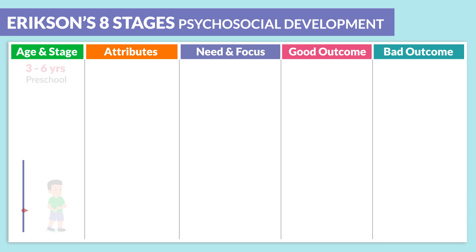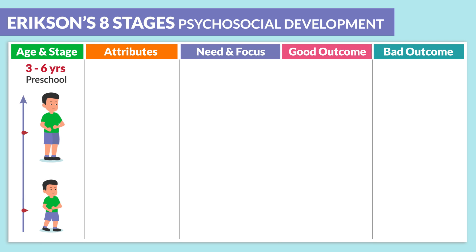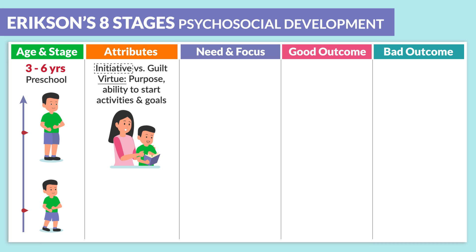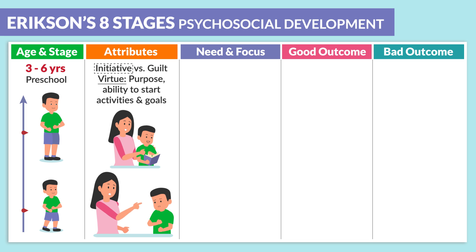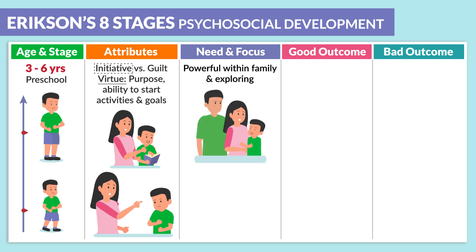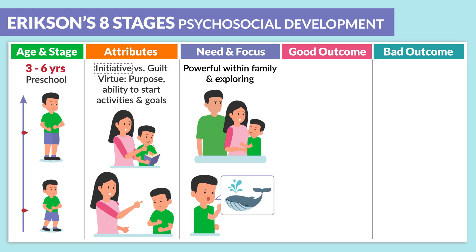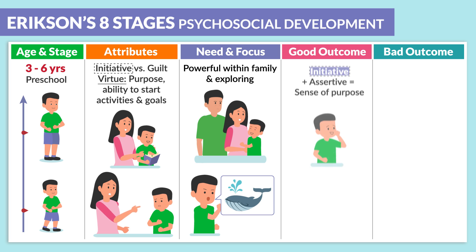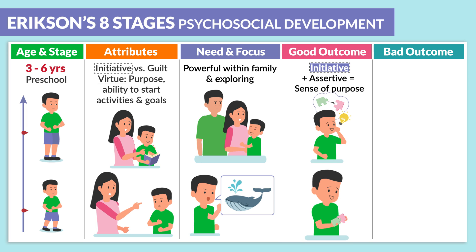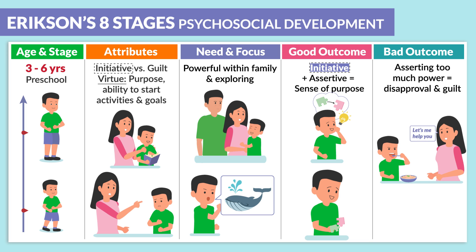The next stage is 3 to 6 year olds — our preschoolers. The attributes are initiative versus guilt. The virtue is purpose, or the ability to start activities and goals. The need and focus is feeling powerful within the family and exploring, as they're getting more and more independence. The good outcome is initiative and being assertive, having a sense of purpose. The bad outcome is asserting too much power, leading to disapproval and guilt.